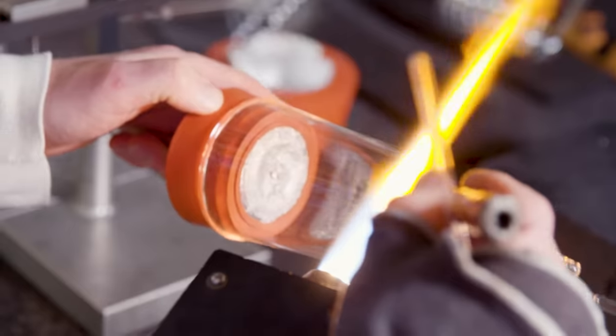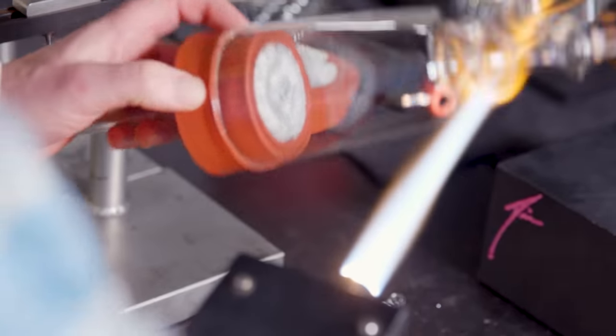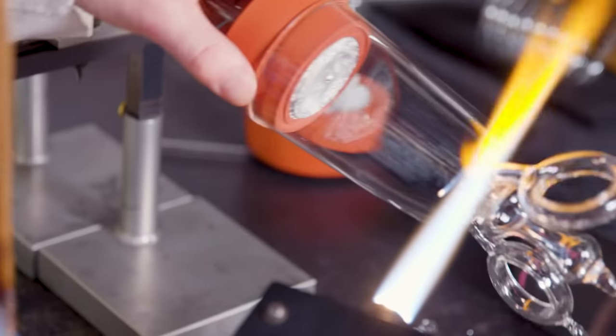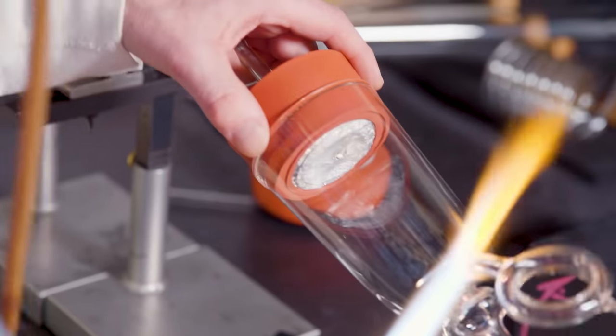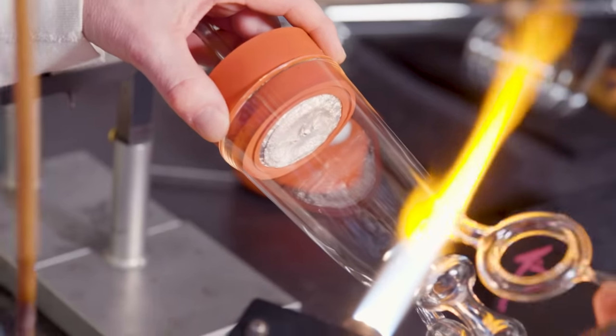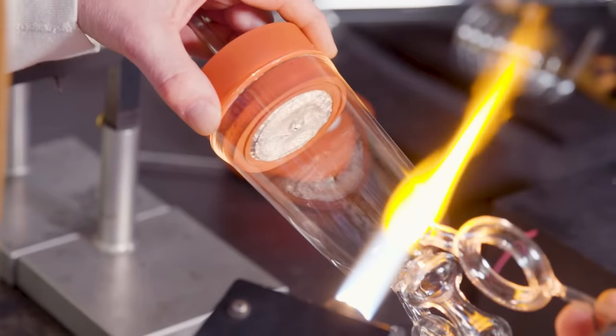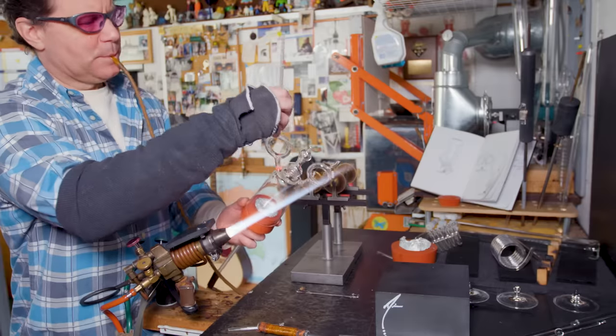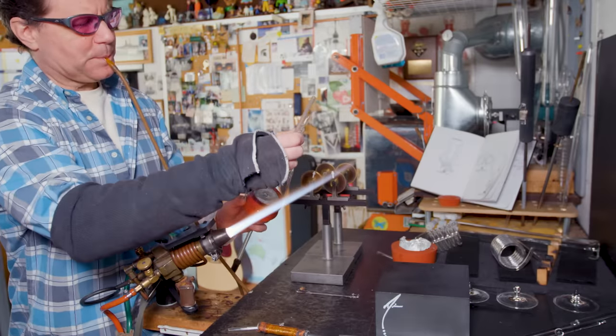I'm still blowing while I'm attaching things so they don't constrict close. Because when you seal the glass together and heat it, it wants to gather onto itself or constrict. And the air pressure inside allows me to blow and flow that wall thickness even from where I made my attachment.